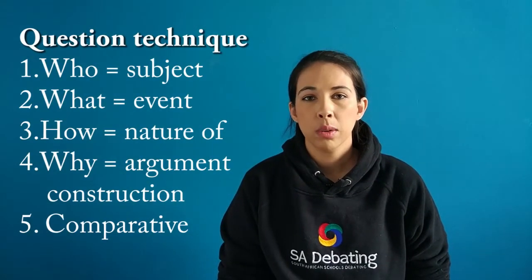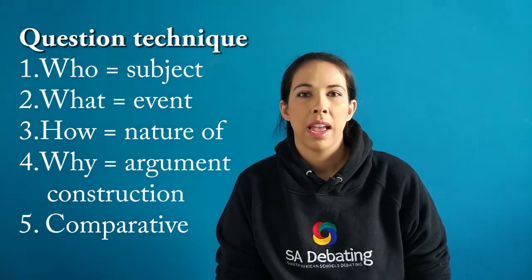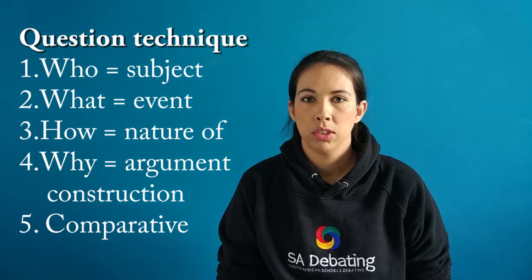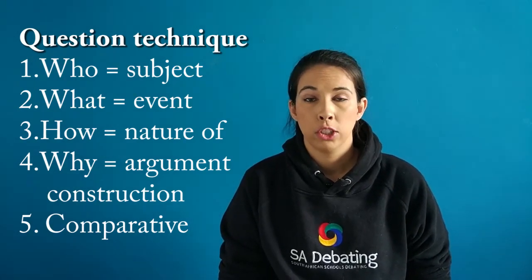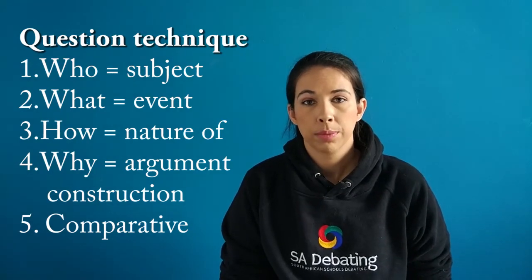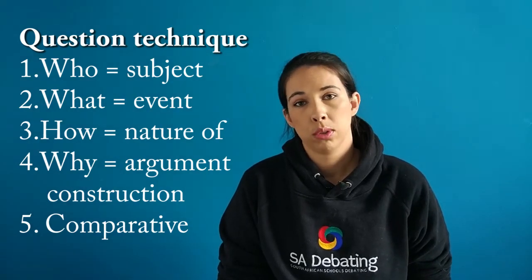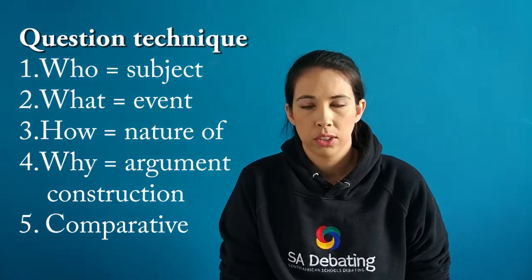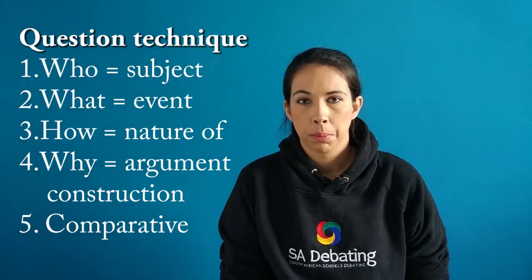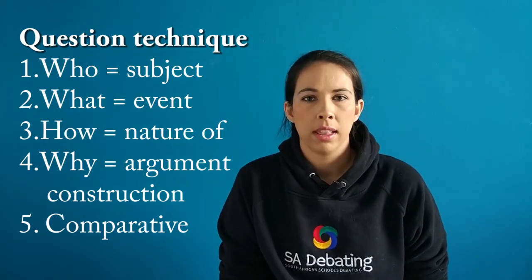The first technique is the questioning technique. What you need to notice is that something is going to be happening, and there is a subject to this thing that is happening. First, answer who — that deals with the subject, and you want to get a clear picture of the subject of the motion, creating a characterization for this person or organization involved. The second is what is happening — you need to explain what is being proposed. Then, how is it happening — is there a specific way that this is being implemented?